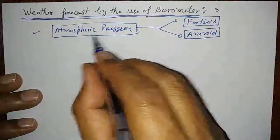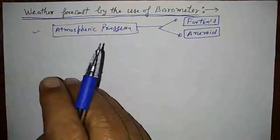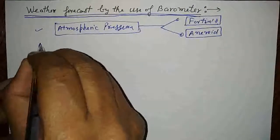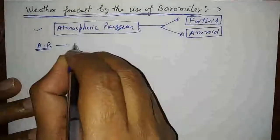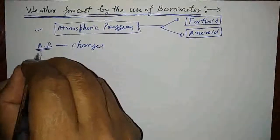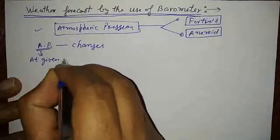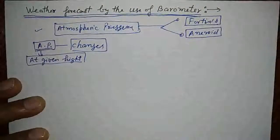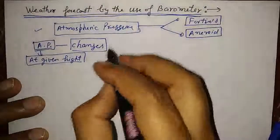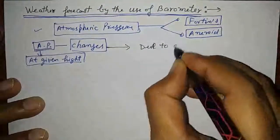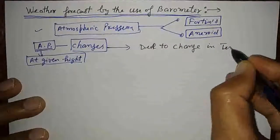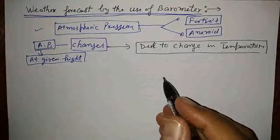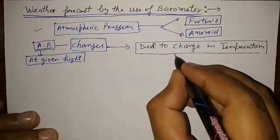Atmospheric pressure is recorded, and based on variation in pressure over time, it is utilized to forecast the weather. At a given height, atmospheric pressure changes. This change is very important to understand — atmospheric pressure changes due to change in temperature.